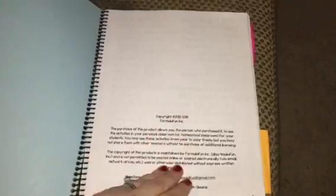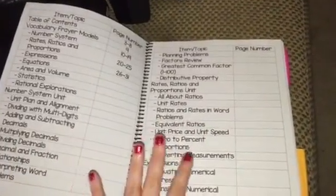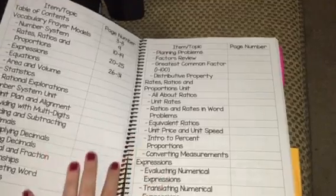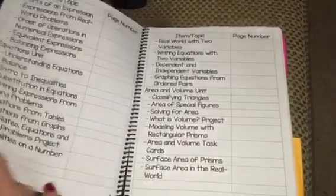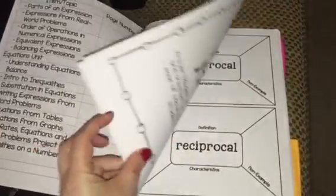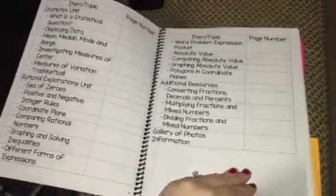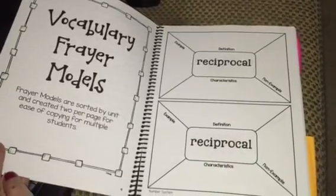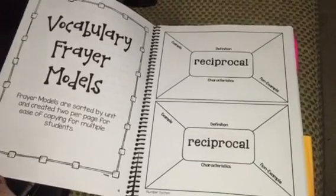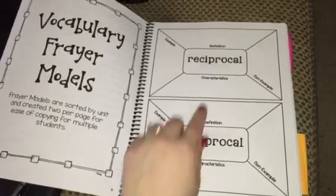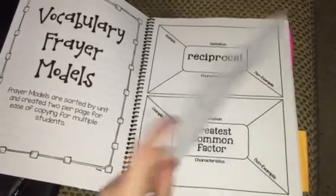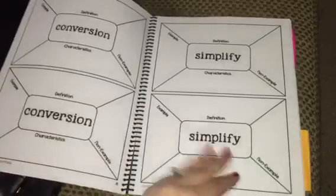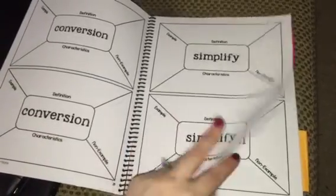Inside you will see my copyright information. The table of contents is completely filled in, and it gives the page number for each item for each of the chapters. And then we go into the Frayer models for the entire notebook — there are two per page for easy copying, and at the bottom it tells you what unit each one goes with.